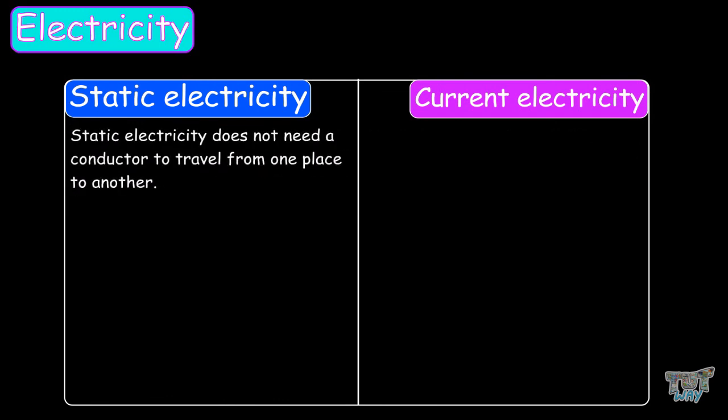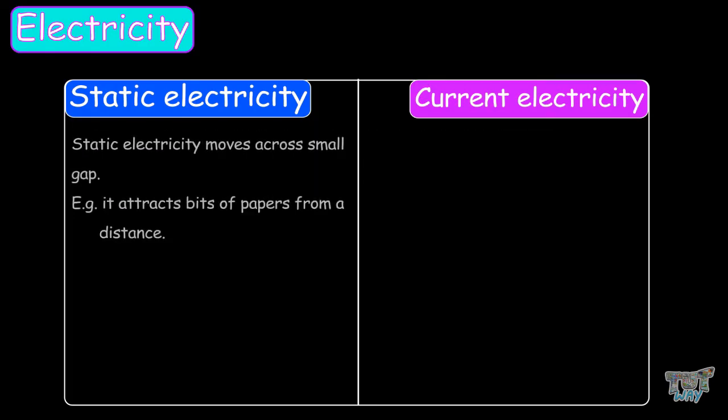Static electricity does not need a conductor to travel from one place to another, whereas current electricity needs some conductor to travel from one place to another. Static electricity moves across small gaps. For example, it attracts bits of paper from a distance. Whereas current electricity cannot travel across gaps, it needs a wire to travel.